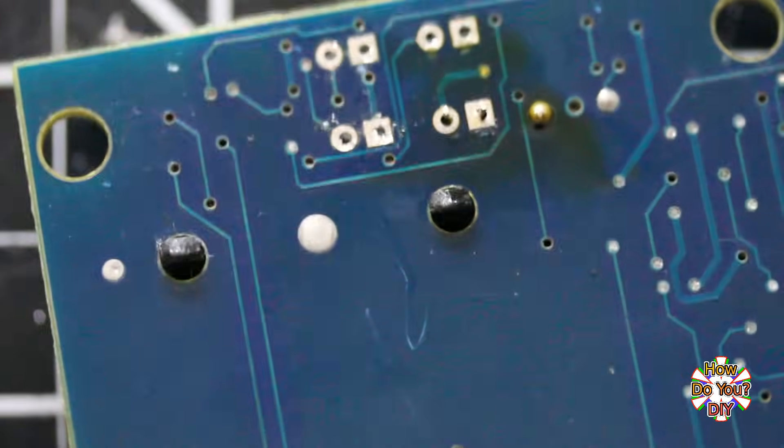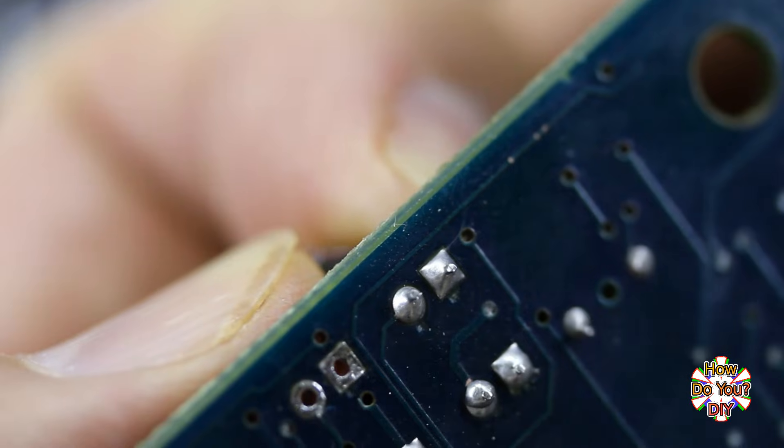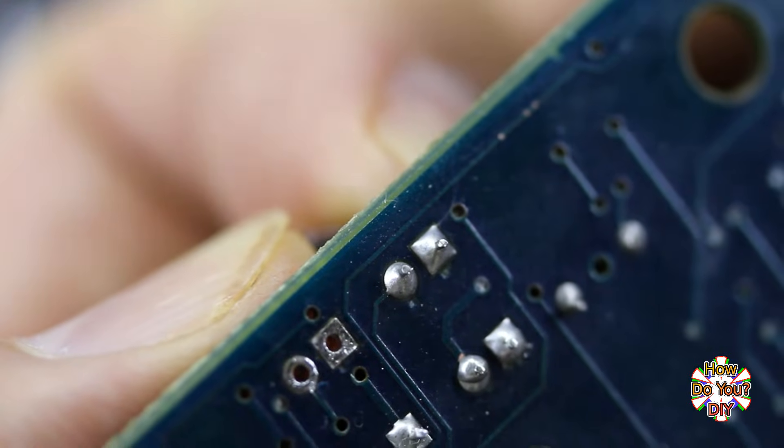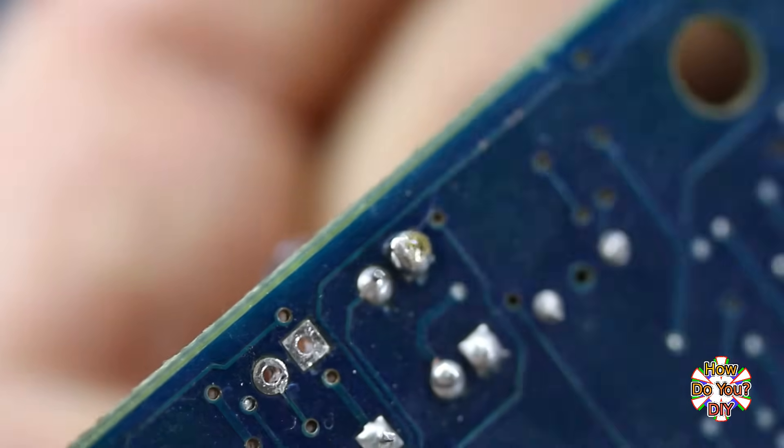Here's a trick that makes it very easy to remove the part, if the leads are close enough together to do this. Instead of removing solder, add more. Add enough solder to connect both of the leads together.